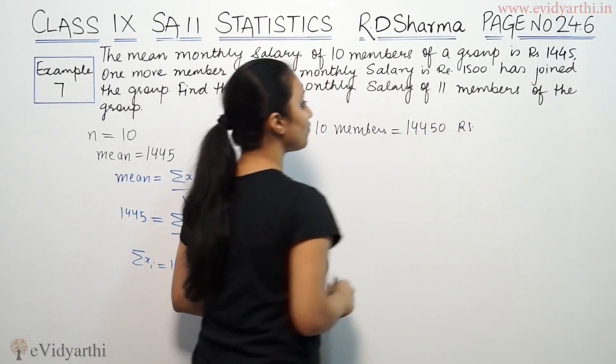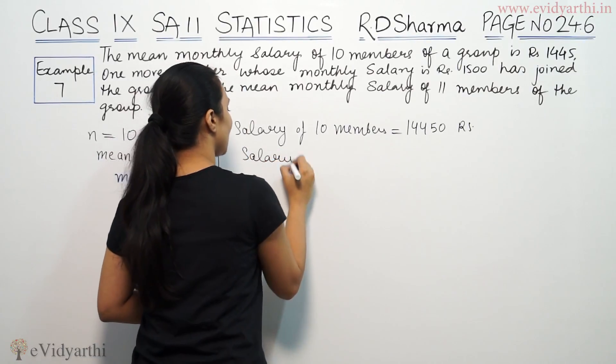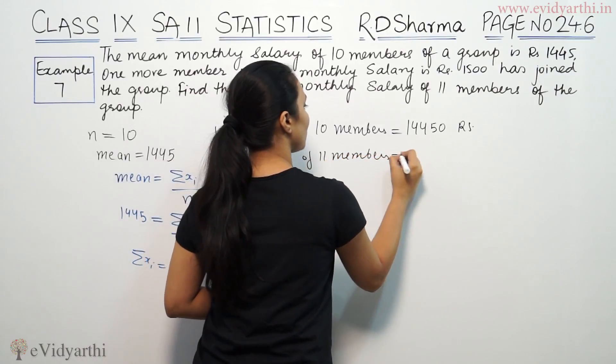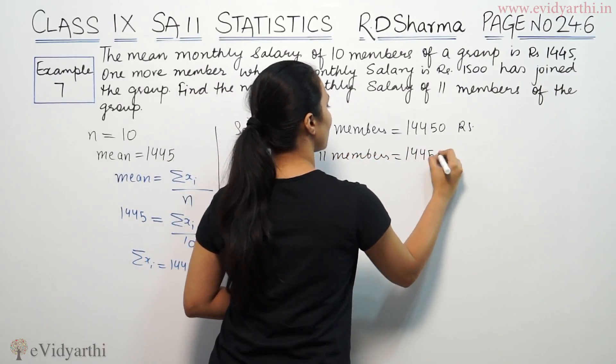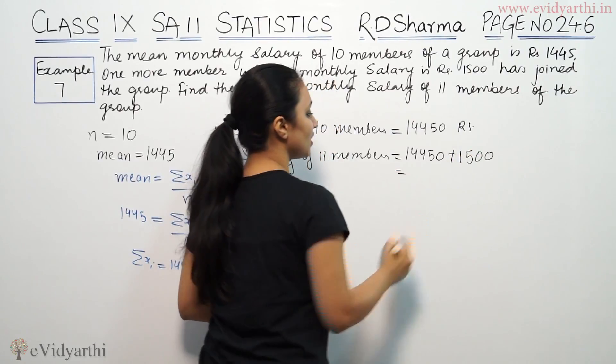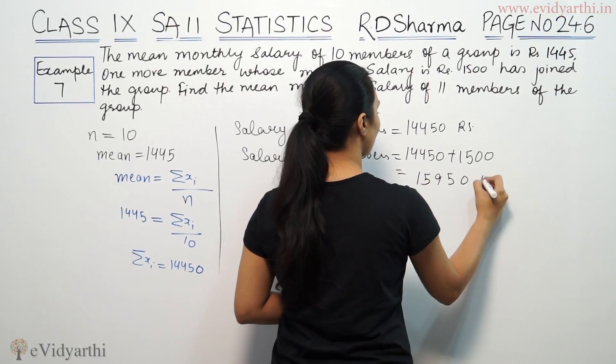This is basically salary of 10 members. Salary of 11 members will be 14450 plus 1500, which equals 15950.